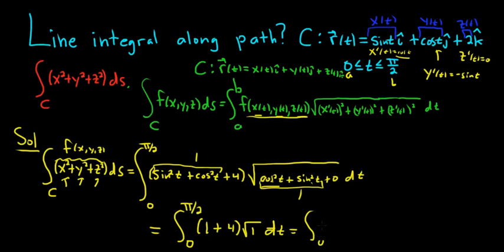Really happy that this worked out so cleanly. I hadn't done this problem. And we're going from 0 to pi over 2. And 1 plus 4 is 5, so we have 5 dt. When you integrate this, you just get 5t. And we're going from 0 to pi over 2.